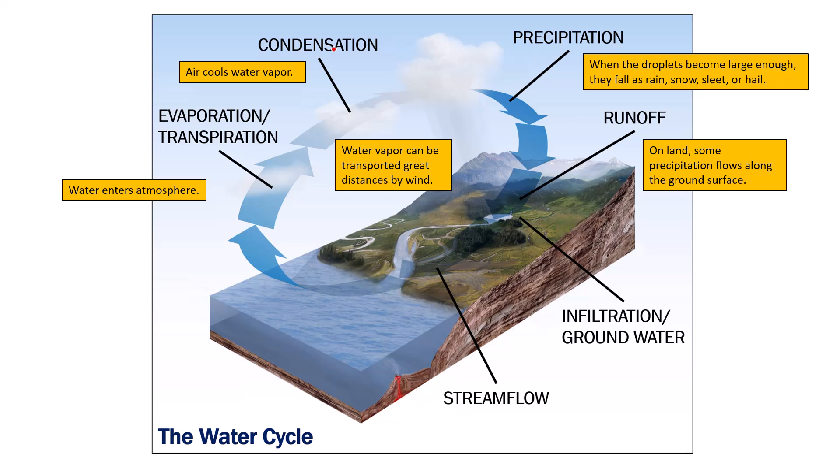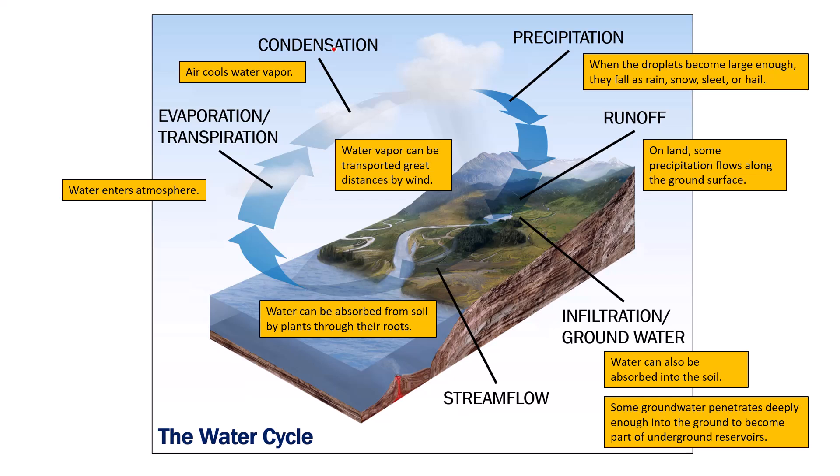Once it rains or the precipitation falls to the earth, once it's on land, some precipitation flows along the ground surface, that's called runoff. However, water can also be absorbed into the soil and become groundwater. If the groundwater penetrates deeply enough into the earth, it can become part of an underground reservoir. There are aquifers and other large reservoirs of water deep within the earth. That's the water source that a lot of wells will tap into. Water can be absorbed from the soil by plants through their roots. Once it's in the soil, plants can still take it in through their roots and eventually it becomes again part of the atmosphere through transpiration and we start the cycle again.